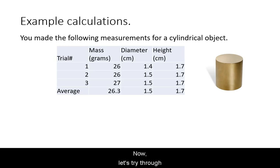Now let's try a sample calculation. Suppose we have a mystery cylinder that looks shiny, goldish colored, and we made multiple measurements of its mass and its dimensions.